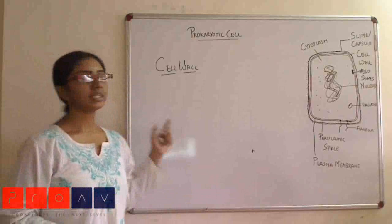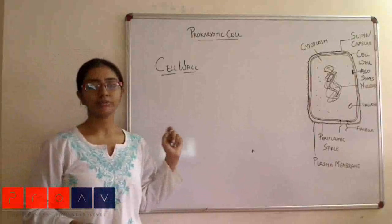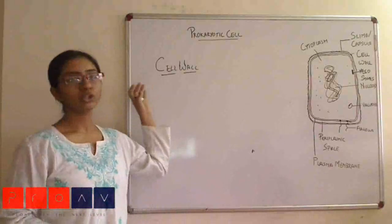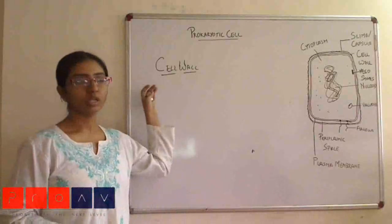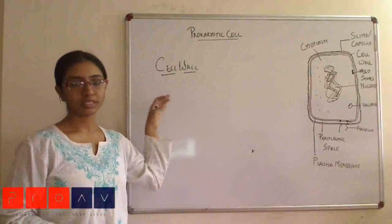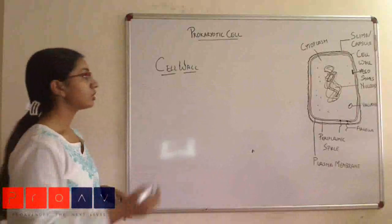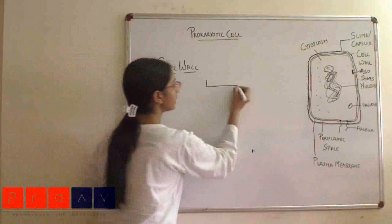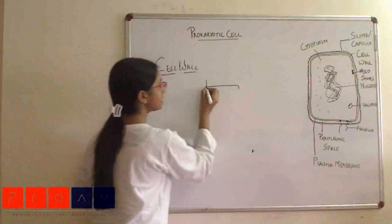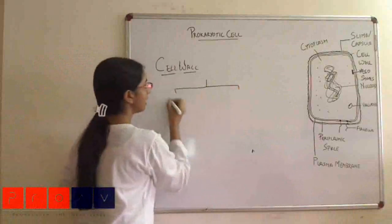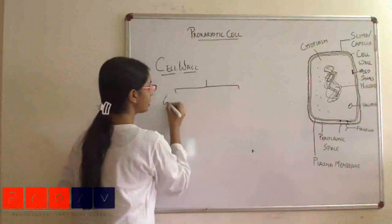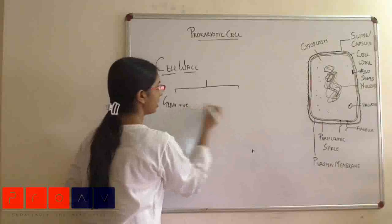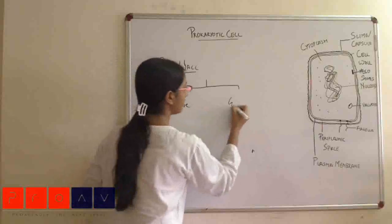Earlier we studied about staining of the bacterial cell. The cell wall plays a major crucial role in the actual staining of the bacterial cell. As we studied earlier, there are two types of bacteria based on the cell wall: gram-positive bacteria and gram-negative bacteria.